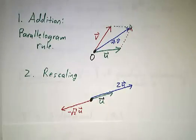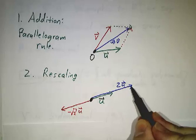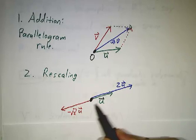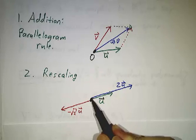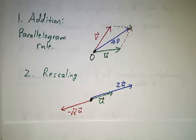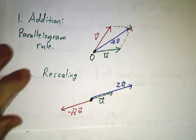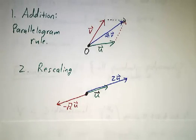And how do you rescale things? Well, you just head off in the same direction. You go twice as far to get 2u. You go the same distance in the opposite direction to get minus u. You can go minus root 2u, whatever. So this set of all arrows, you can check that the rules of arithmetic work. It takes a little bit of geometry, but they do. And that's another example of vector space.